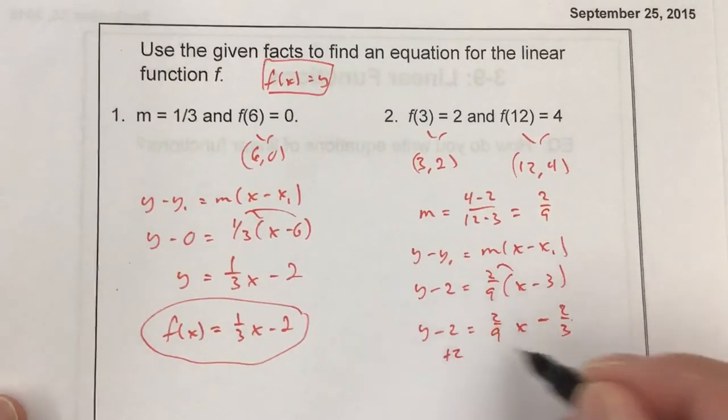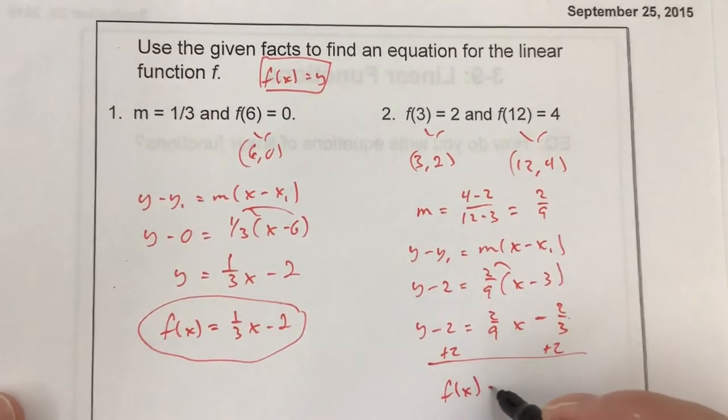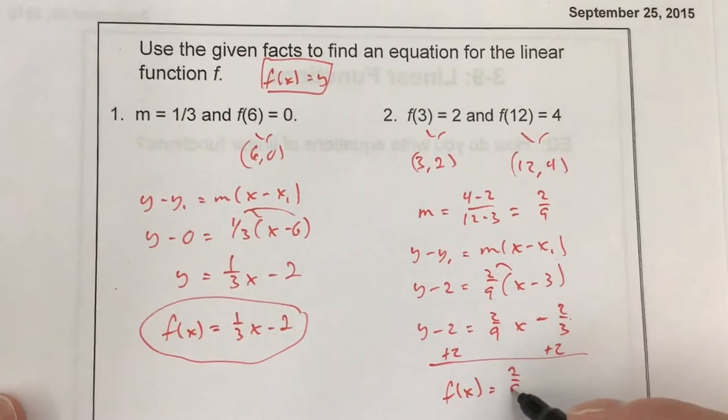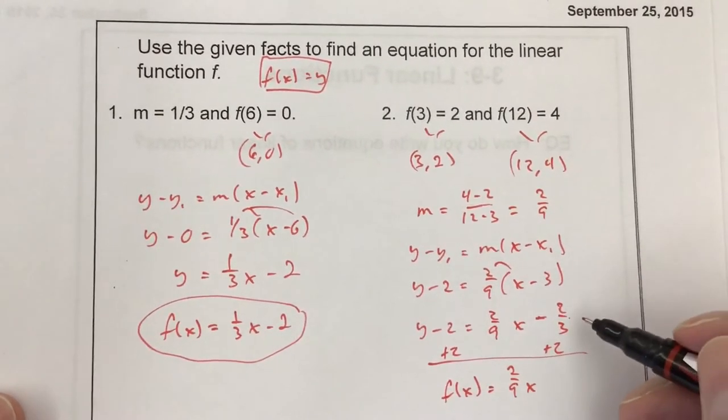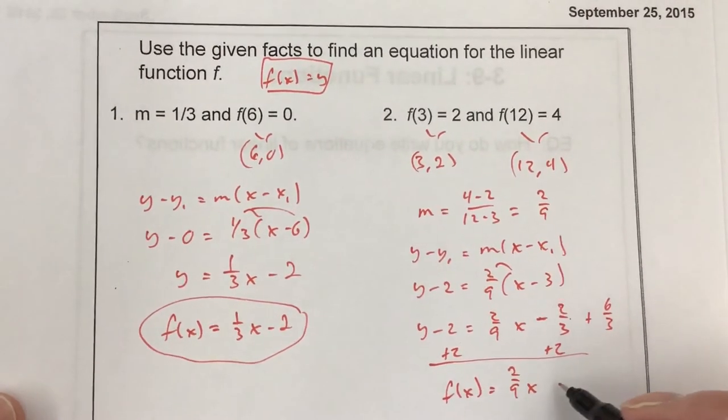2/9 times 3 is going to be 6/9, which reduces to 2/3. Then I've got to add 2 to both sides. Instead of y, I'm going to just put the f(x) here. I have my (2/9)x, and negative 2/3 plus 2 is the same as adding 6/3 to negative 2/3, so I get 4/3.